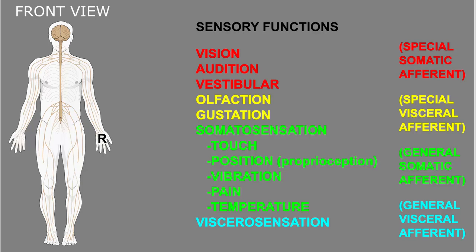In this video, I want to give an overview of the sensory functions of the nervous system. The nervous system can sense many aspects of the body and the environment. Each type of stimulus that can be sensed is detected by some type of receptor, and here I've represented that with this letter R in this particular part of the body.